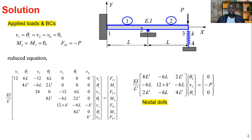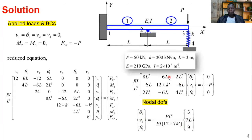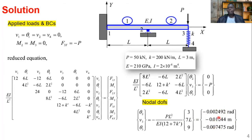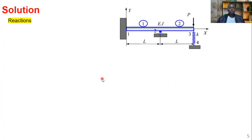To solve this three-by-three system, row reduction is recommended rather than Cramer's rule. By making one unknown the subject and substituting, you obtain theta2, v3, and theta3. Remember k-prime was defined as the reciprocal quantity involving EI over L cubed. Substituting the given values of P, L, and k-prime yields numerical answers for all three degrees of freedom.